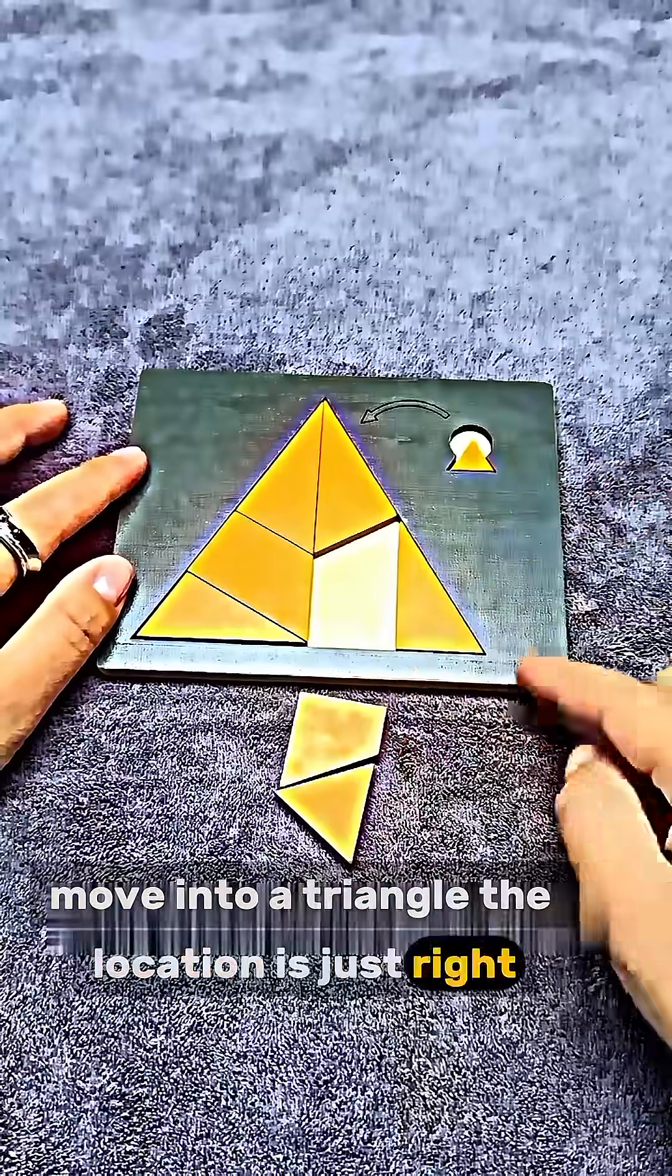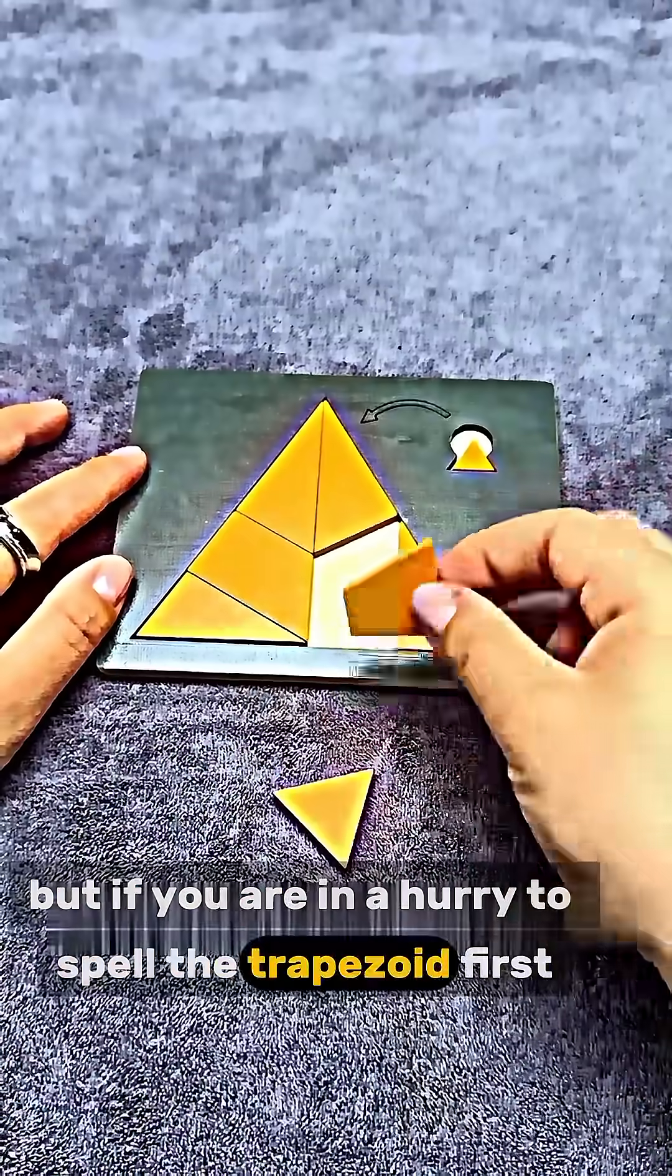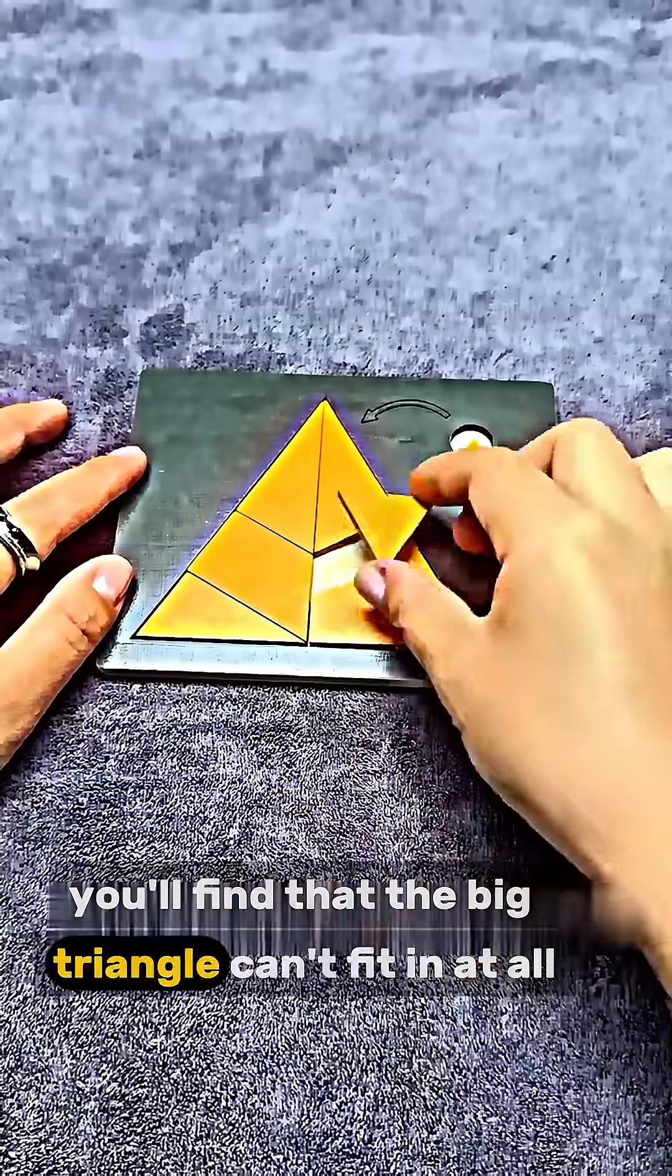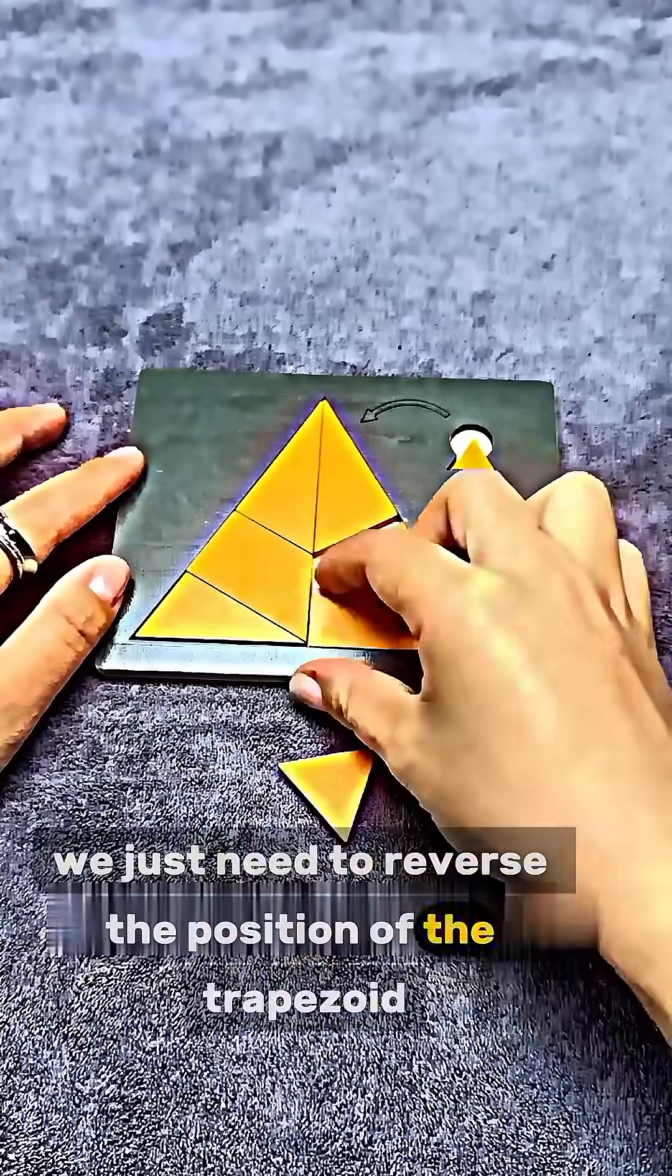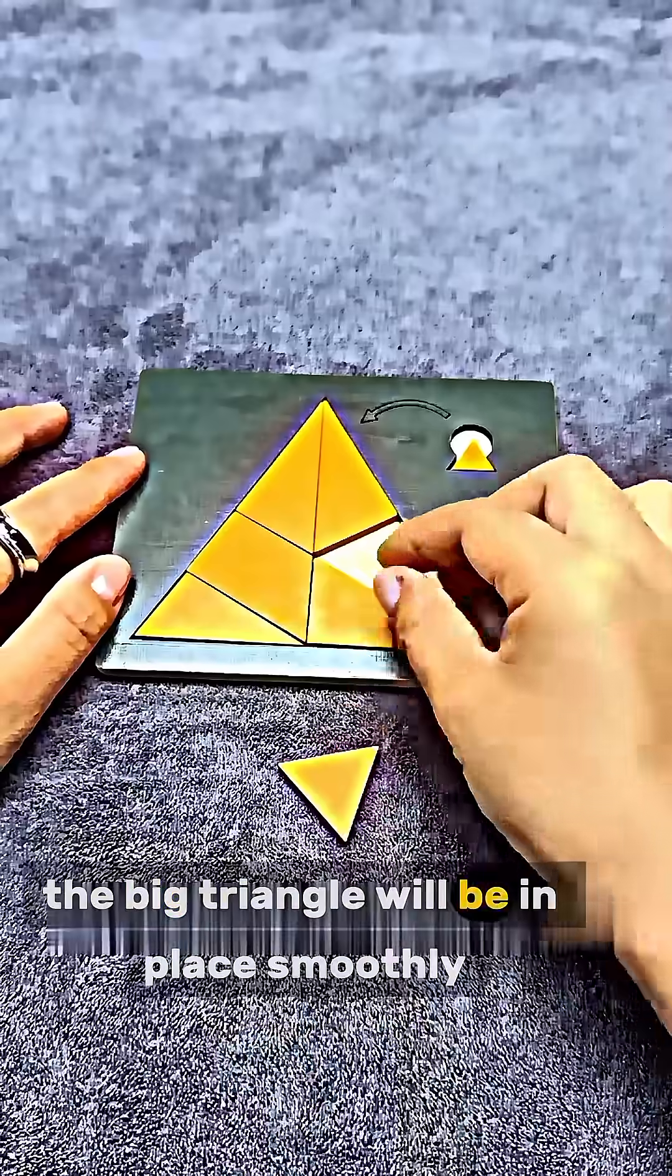The location is just right. But if you are in a hurry to spell the trapezoid first, you'll find that the big triangle can't fit in at all. But we just need to reverse the position of the trapezoid. The big triangle will be in place smoothly.